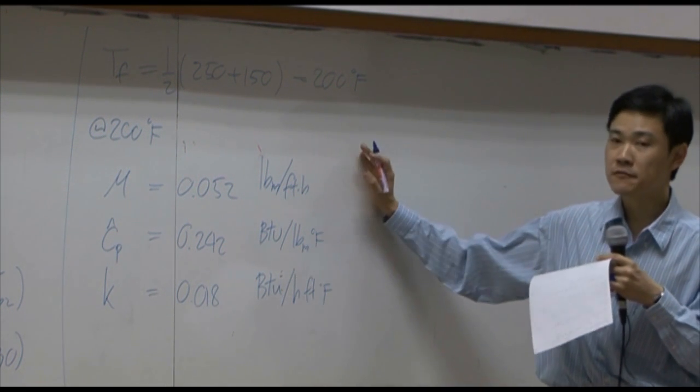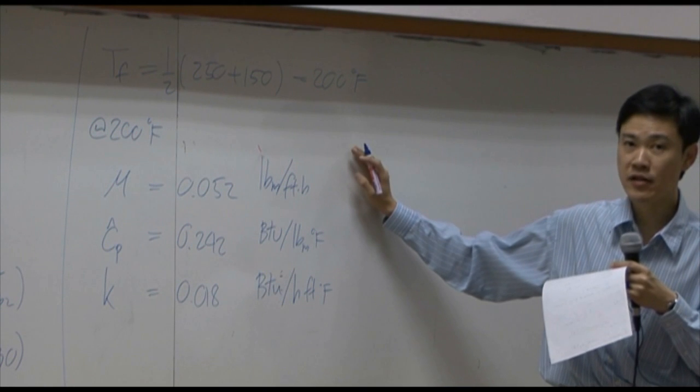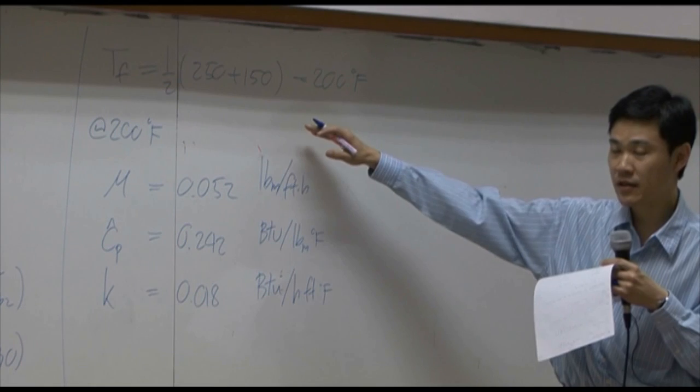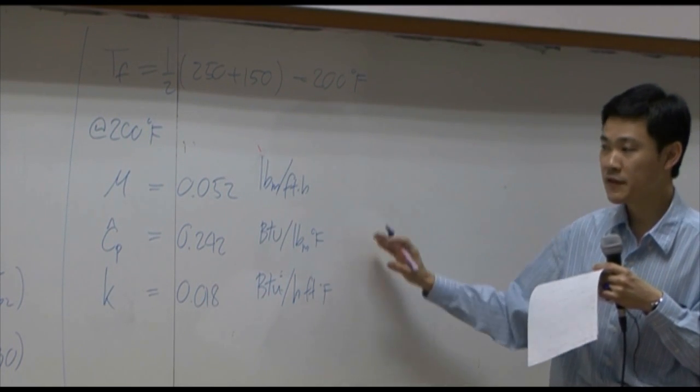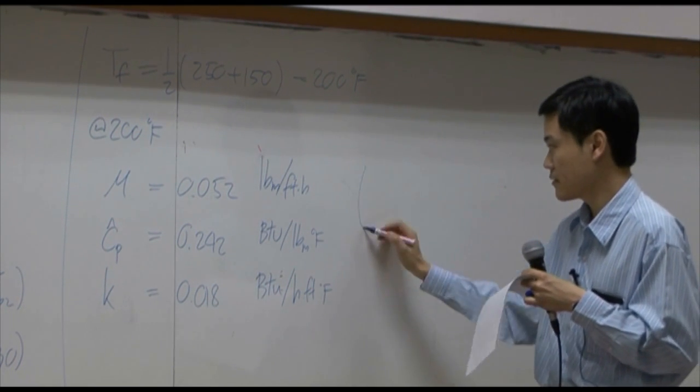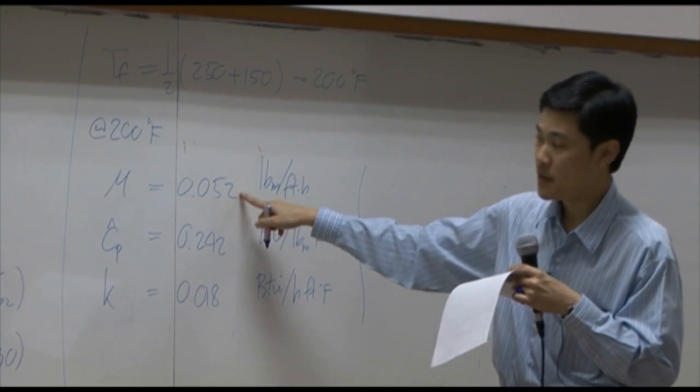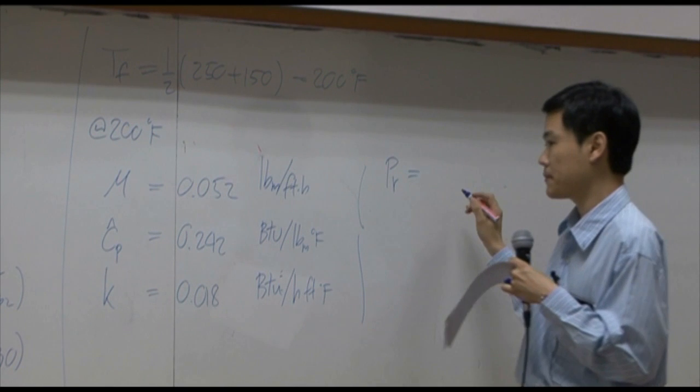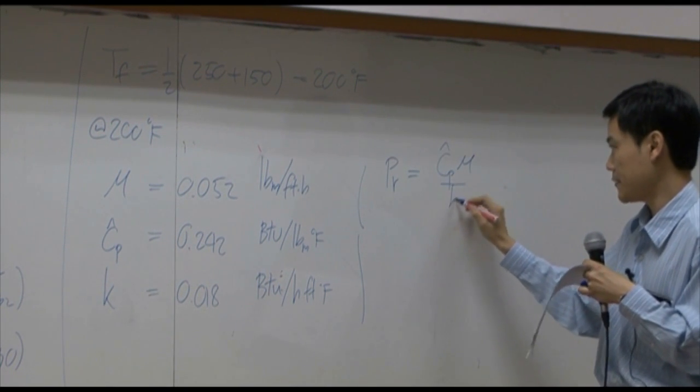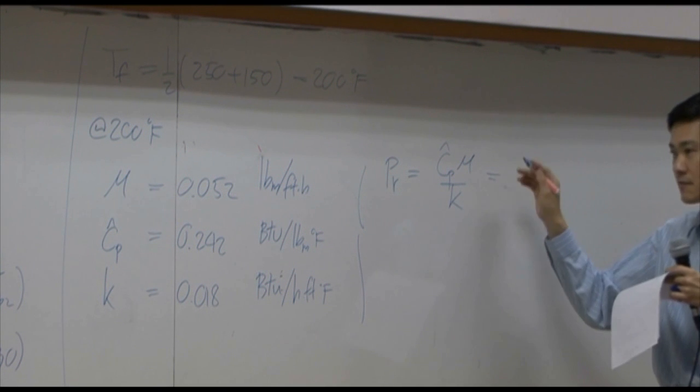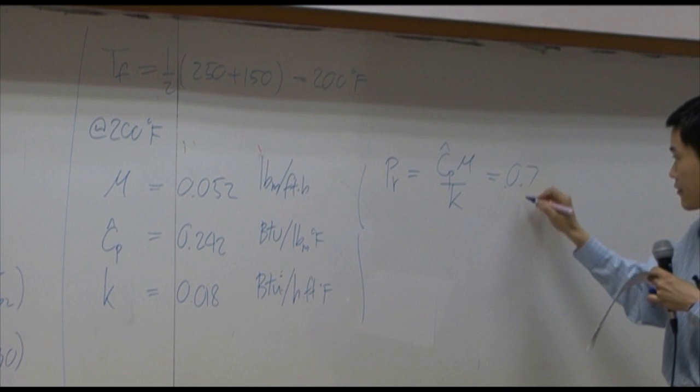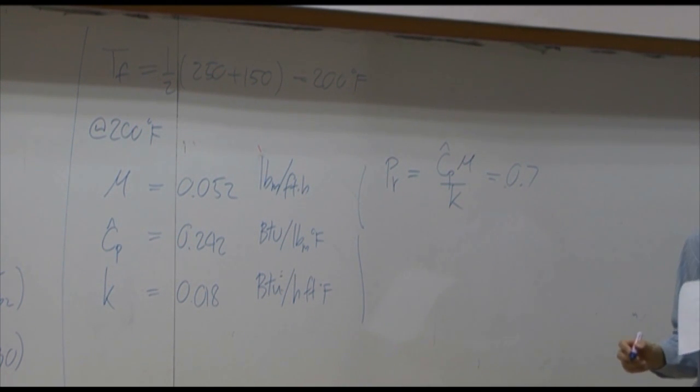Once we found the average temperature, then we can find the physical properties at that particular temperature. From these physical properties, if you take Cp mu divided by k, you can get Prandtl number. Cp mu over k. Just punch the number in the equation. You get Prandtl number to be 0.7. No unit. It is dimensionless.